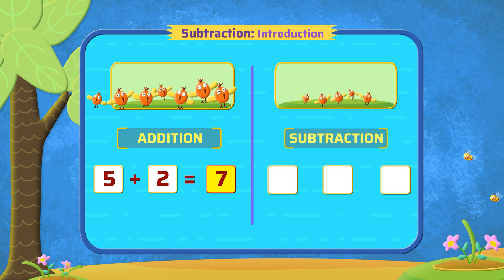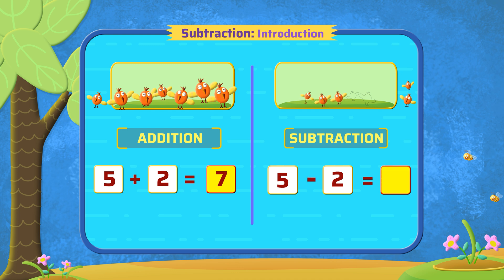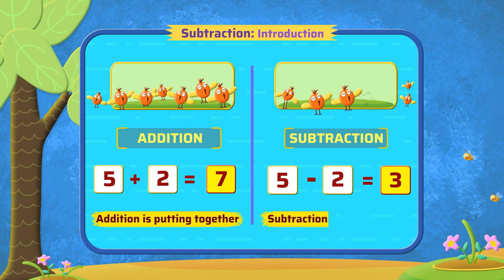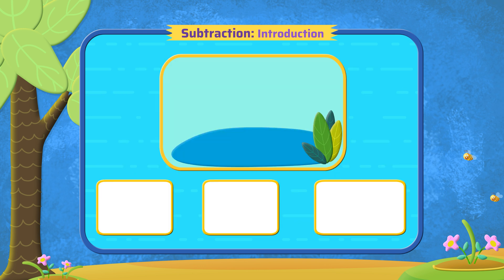Now let's look at subtraction. In subtraction, we take away. There are five birds and two fly away, so out of the 5 birds we subtract 2 and we are left with 3 birds. Addition is putting together and subtraction is taking away. You are on your way!